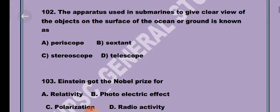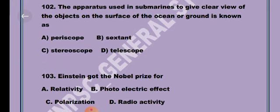Next question, Question 3. Einstein got the Nobel Prize for Option B, Photoelectric Effect.